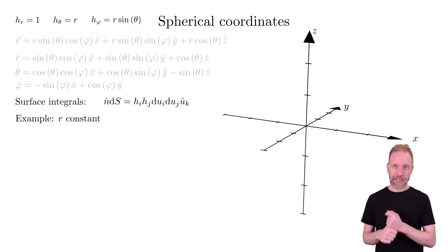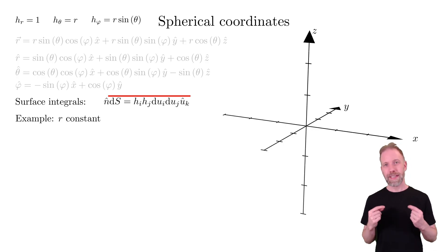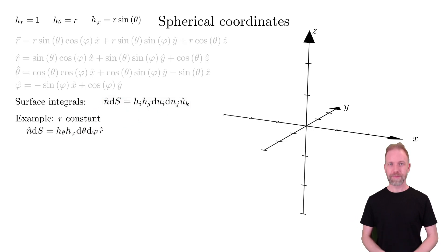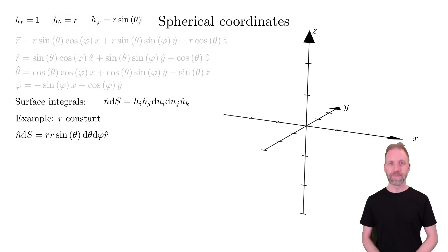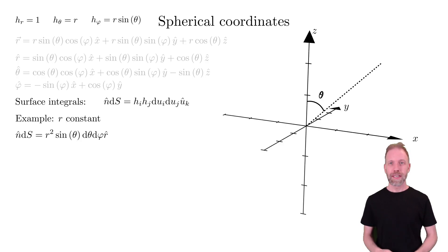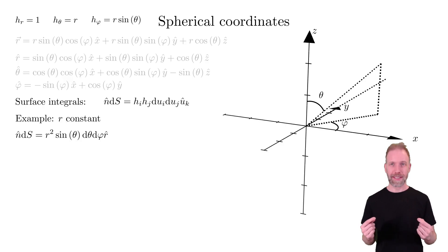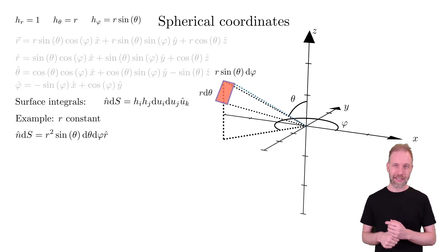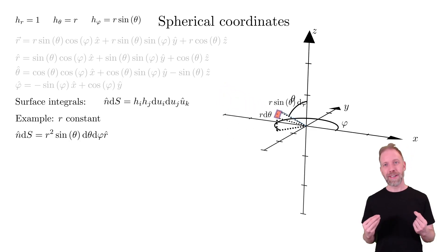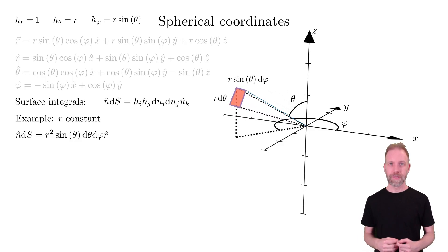Let us start with the case where the radius is constant. This means that we integrate over theta and phi. We can insert the values for h_theta and h_phi. Let us visualize this surface element: starting from a position, make a small step in theta and phi, which gives the surface element. This surface element has sides r d-theta and r sin(theta) d-phi, giving the area r² sin(theta) d-theta d-phi. We can see that the area varies with the radius and with theta.